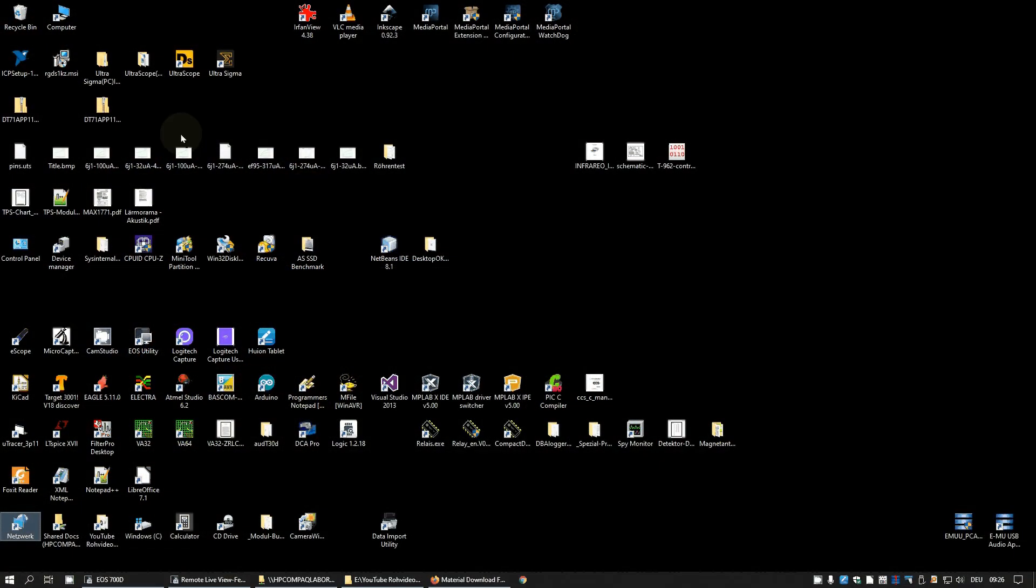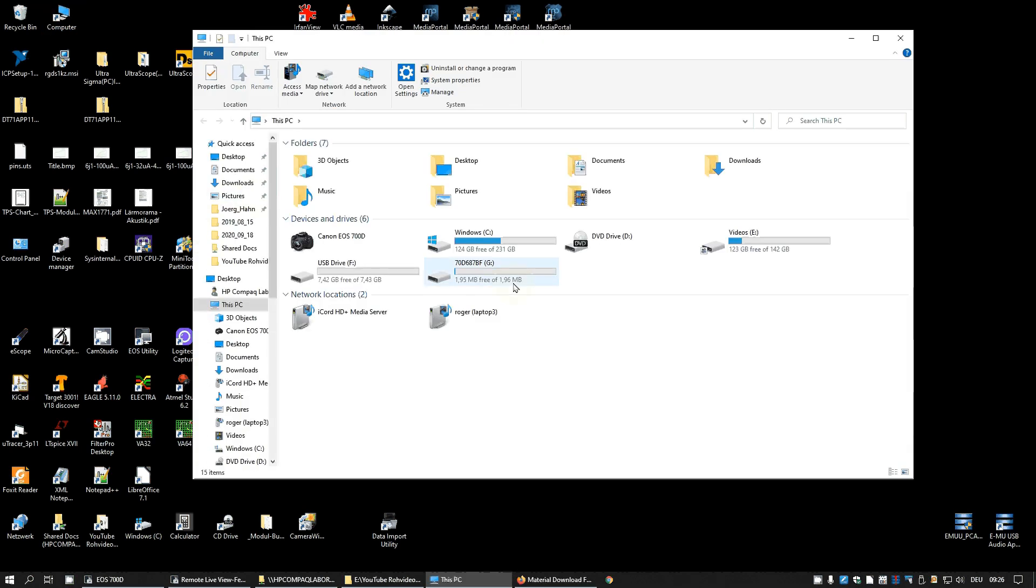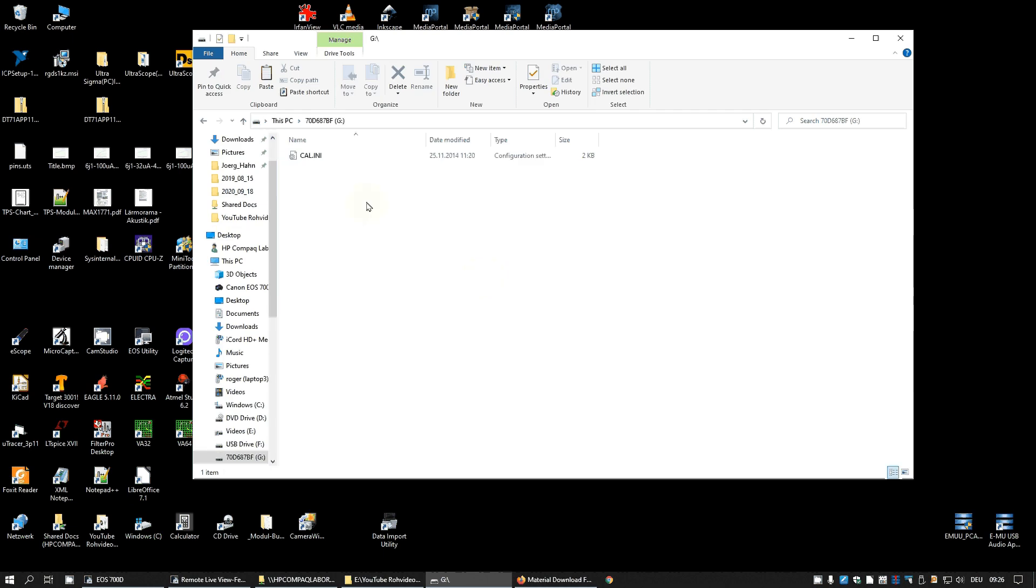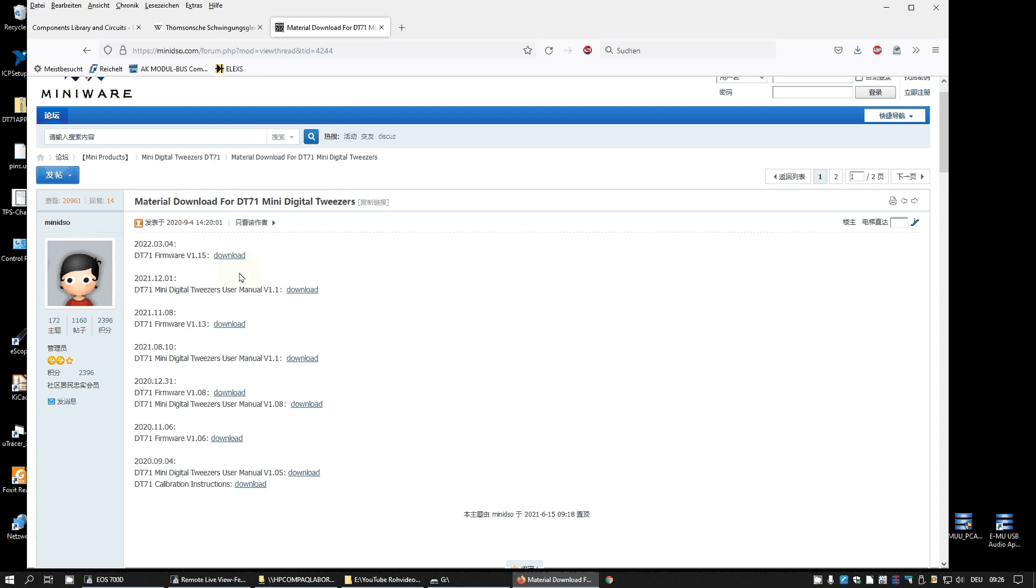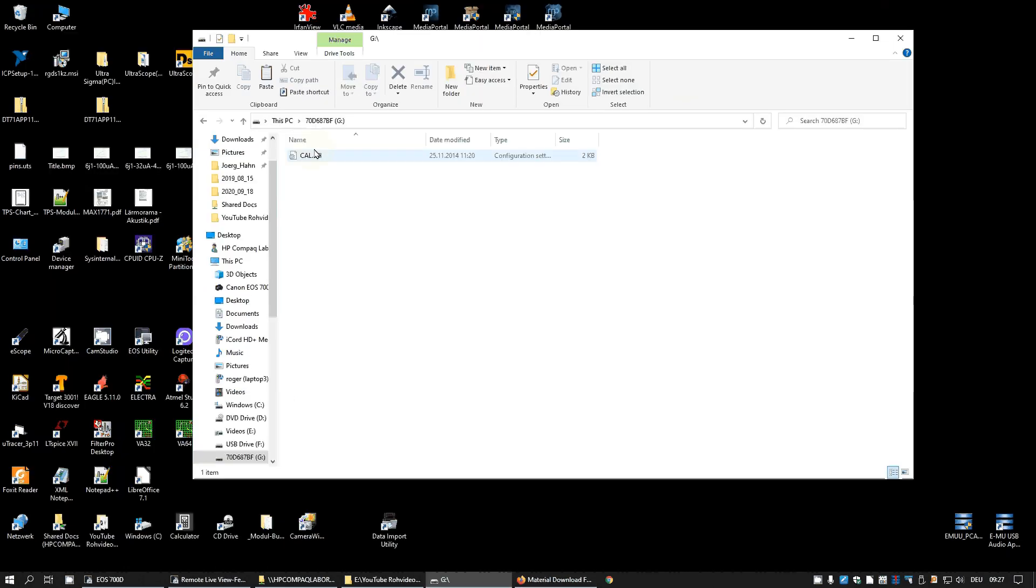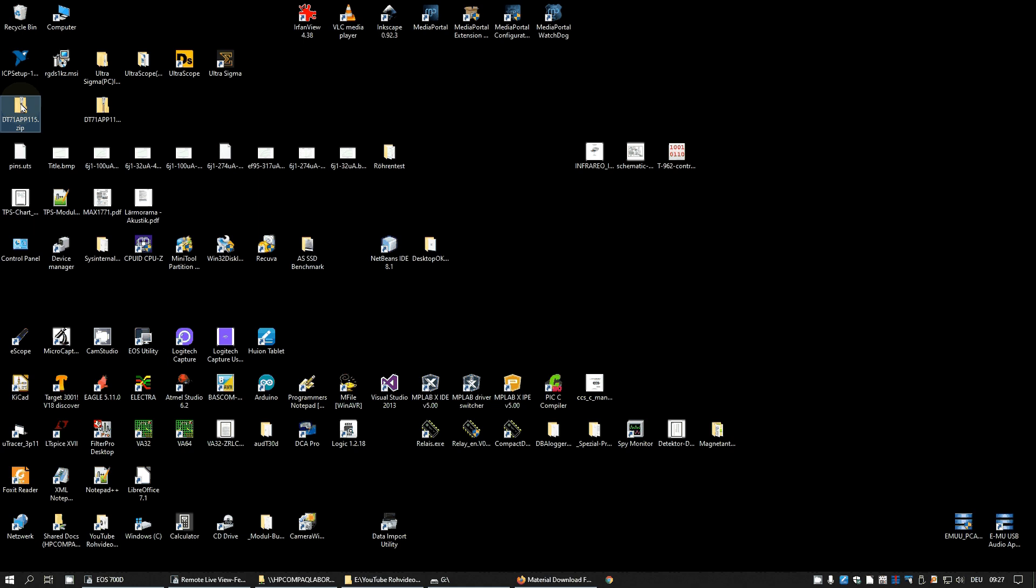Once you have connected the DT71, take a look at your computer and you will find a new removable disk. And when you open it, when you double click it, you should only find the cal.ini file, which will give us some problems later. And next is you have to download the firmware that you want to use here from the mini-dso.com homepage under the entry material download for DT71 mini digital tweezers. And just by chance, I have momentarily installed version 1.13 and the newest is 1.15. So, you download the zip file, which I have done before. And this is the zip file.